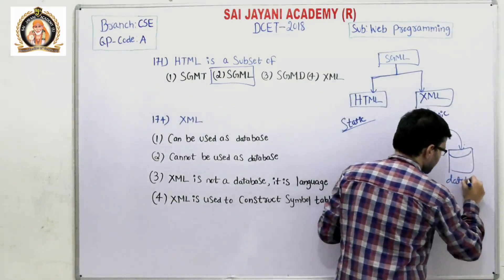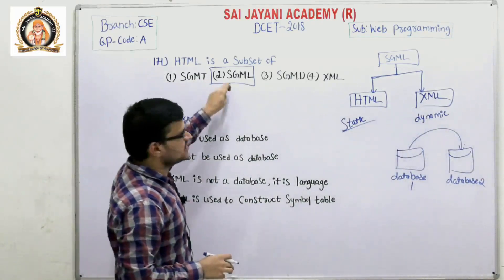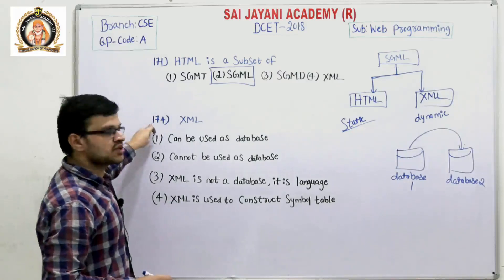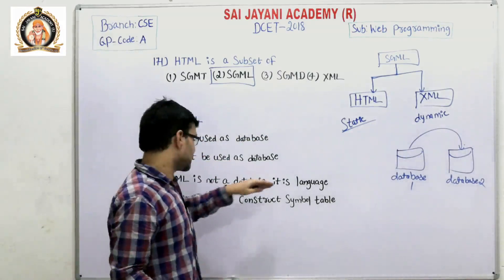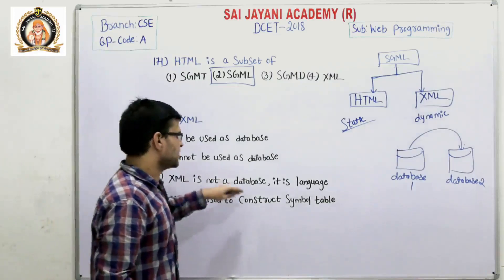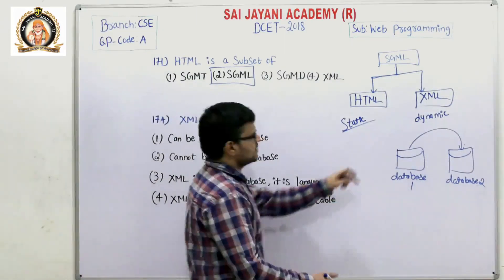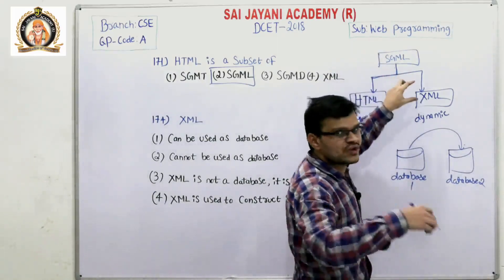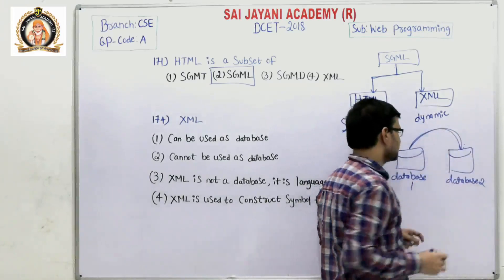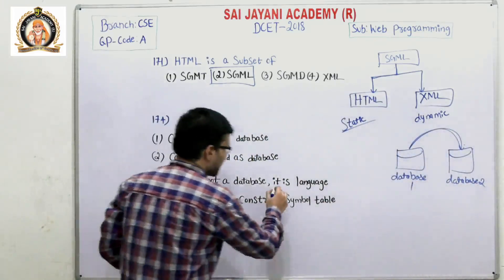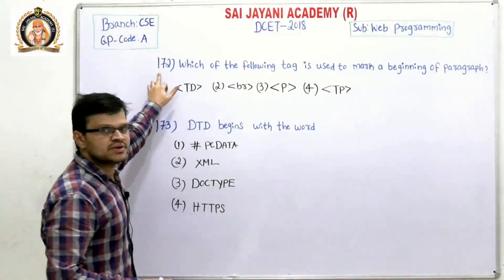So for question number 171, the second option is the right answer. For question number 174 — XML — we have four options: the first is 'can be used as a database,' the second is 'cannot be used as a database,' the third is 'XML is not a database, it is a language,' and the fourth is 'XML is used to construct a symbol table.' Since XML is a language that transfers data between databases, it is a language but not a database. So for question number 174, the third option is the right answer.